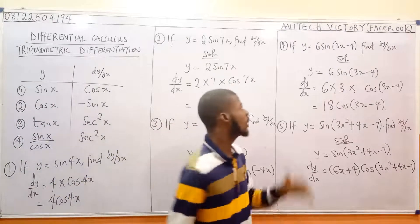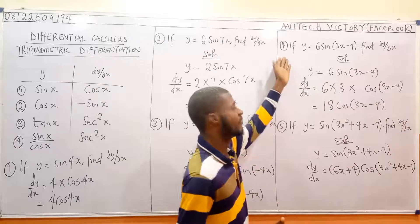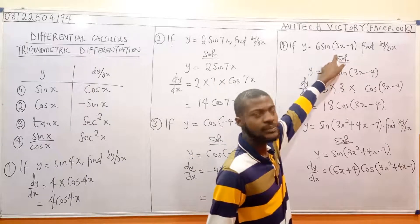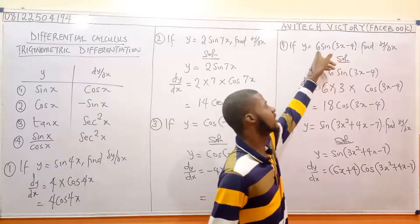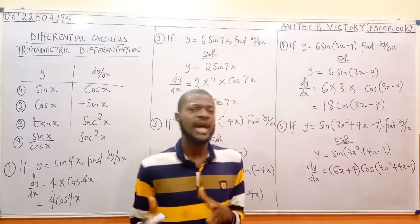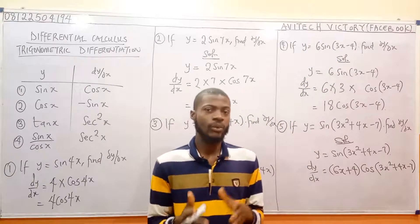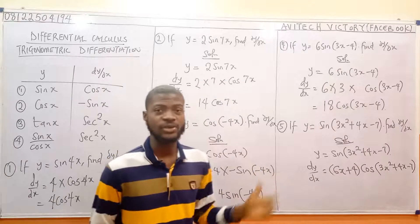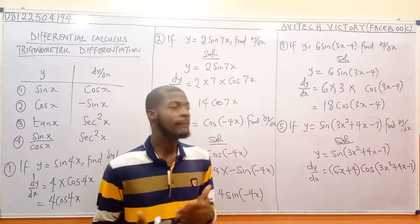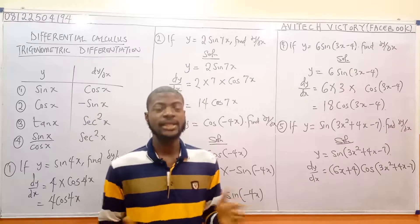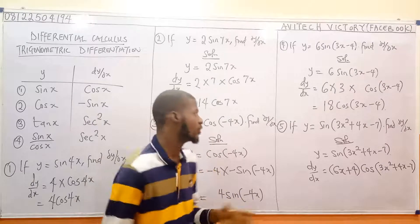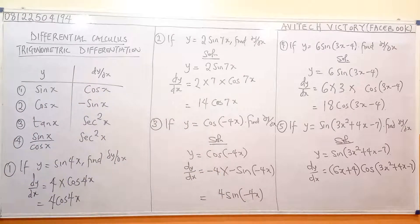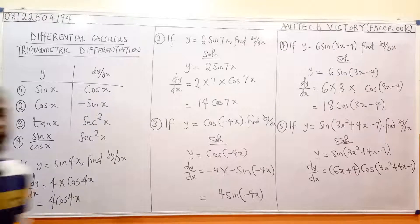In question 4, the 6 was a constant. What if instead we had something with x multiplying the trig function? That would require the product rule, because we'd be multiplying two things that both contain x. So question 6 will be on product rule.